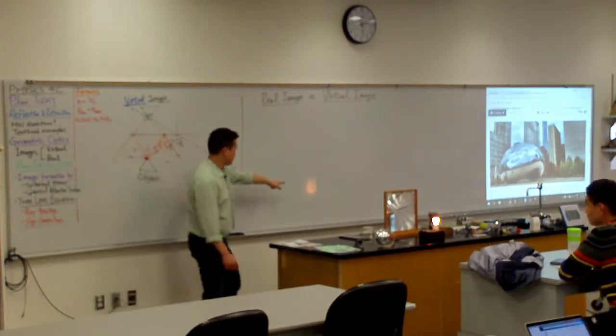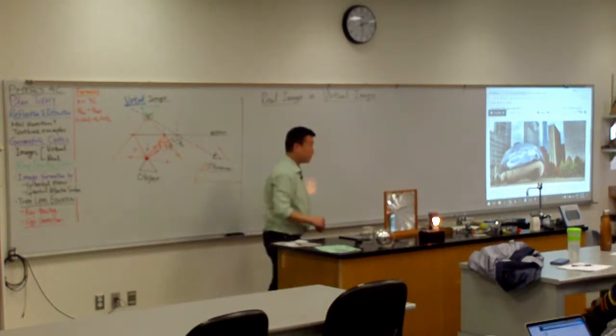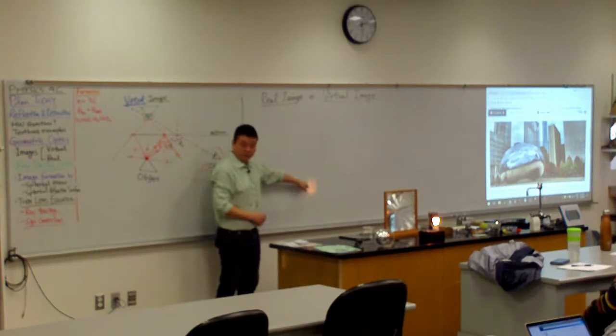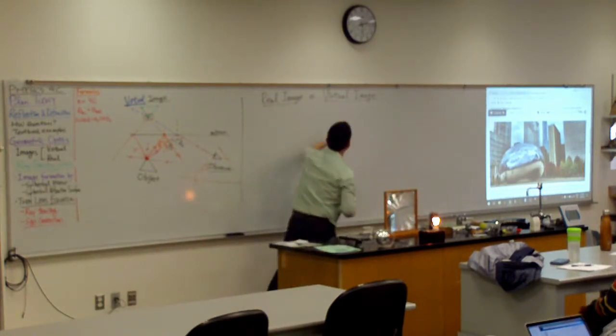When you have a real image, sort of imagine when it was the other way around, the light rays do appear to be coming from this point image. That's what image is, and they actually do. They actually do come from here. So that's the distinction between a real and virtual image.